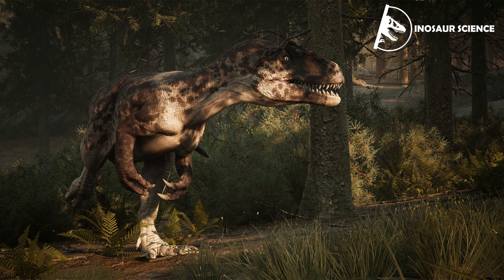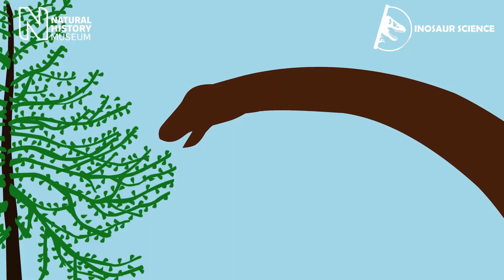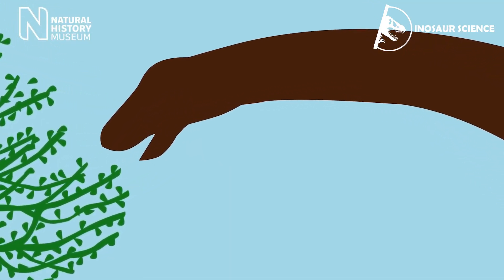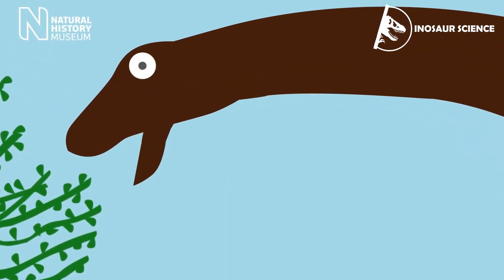Fossilization is the process by which a plant or animal becomes a fossil. This process is extremely rare, and only a small fraction of the plants and animals that have lived in the past 600 million years are preserved as fossils. This may be surprising considering the millions of fossils that have been collected over the years and the many billions still in the rocks. Those plants and animals that do become fossils generally undergo, with some exceptions, several key steps.